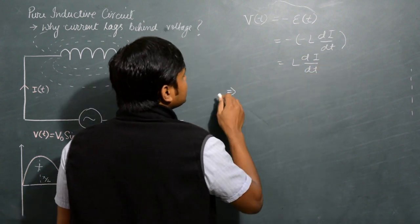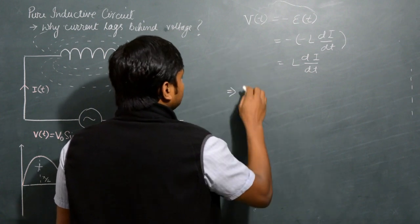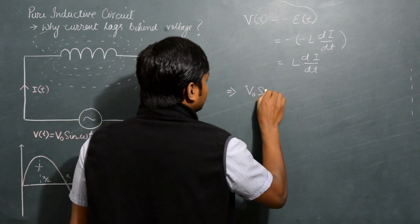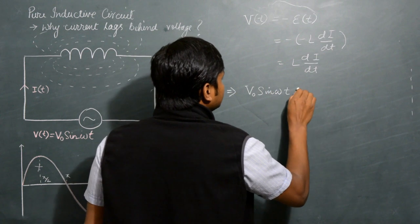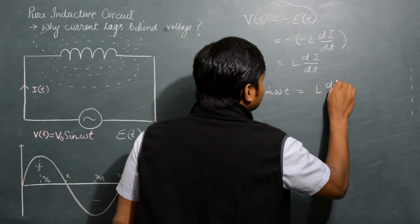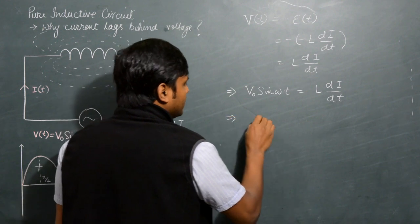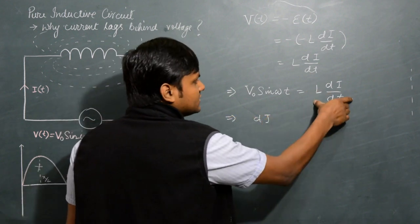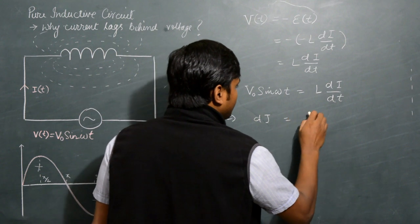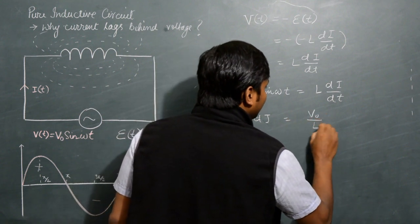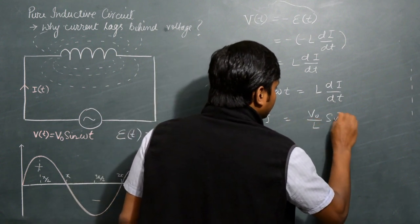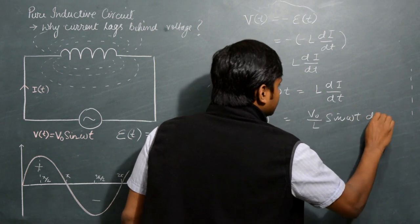This can simply be written as V₀ sin(ωt) equals L di/dt. Or if I bring this side here, then di can be written as V₀/L sin(ωt) dt.